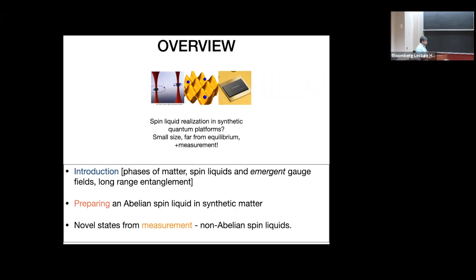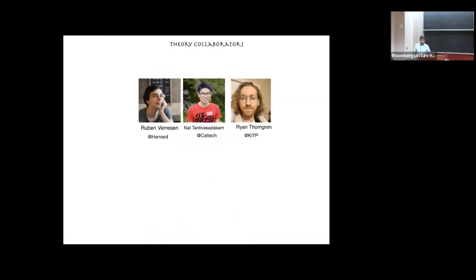The platforms we're interested in include cold atom systems — atoms trapped in lattice potentials, which are getting increasingly sophisticated and can be made to interact very strongly — or quantum processors like the IBM or Google quantum processor, where you have some degree of control over the quantum bits. It's still nowhere near what you'd want for a quantum computer, but there are many qubits and at least some of these protocols can be implemented. This was done in very close collaboration with theory and experimental collaborators; Matt is actually in the audience this week.